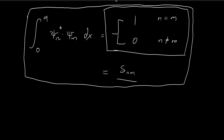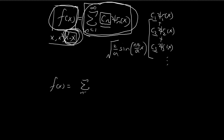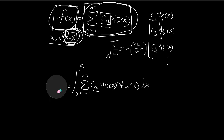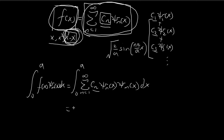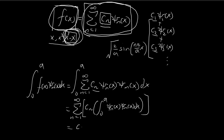We can do this by using what we proved in the previous video. Starting with the line f(x) equals the sum of cn·ξn(x), we just don't yet know how to tweak cn. We can find cn by multiplying both sides by ξm(x) — where m is just a dummy constant, it could be anything — and then integrating both sides from 0 to a. On the left-hand side we also multiply by ξm(x) and take the integral, and on the right-hand side we can pull out the constants, giving us a sum of integrals of ξn(x)·ξm(x) dx.